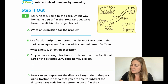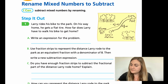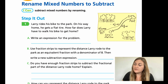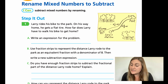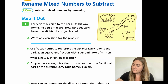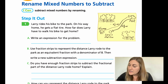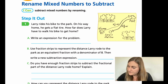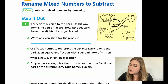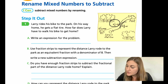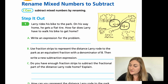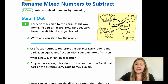Let's go ahead and move into the lesson on page 161. It starts with a word problem: Larry rides his bike to the park. On his way home he gets a flat tire. How far does Larry have to walk his bike to get home? The yellow square to the right shows from home to the park is three and one fourth, and from the park to Larry's flat tire is two and three eighths. So we need to subtract to find the remaining distance.